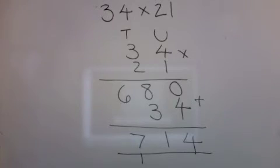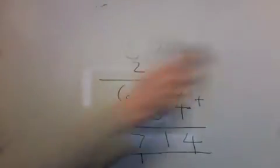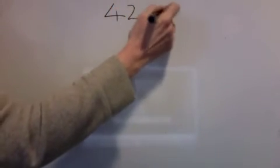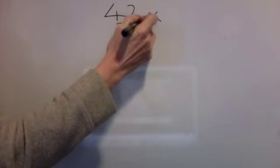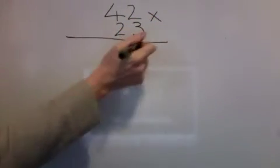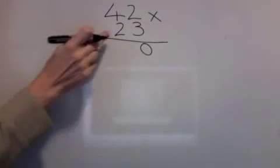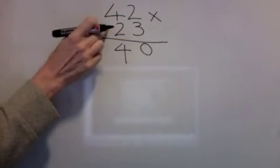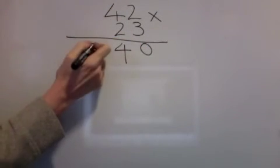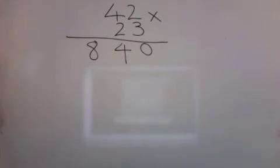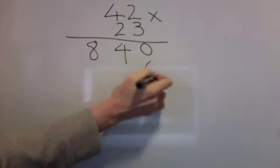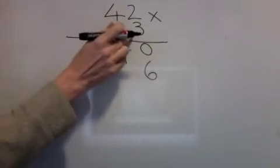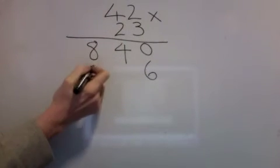714. Let's do this one more slowly. Forty-two times twenty-three. Nought down. Two times two is four. Two times four is eight. Three times two is six. Three times four is twelve.